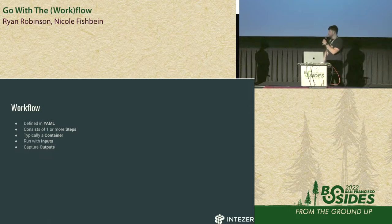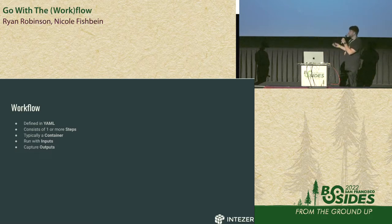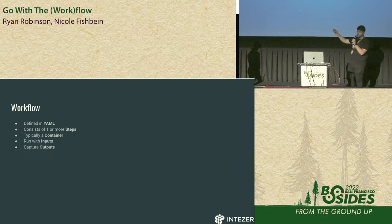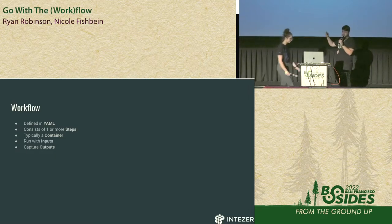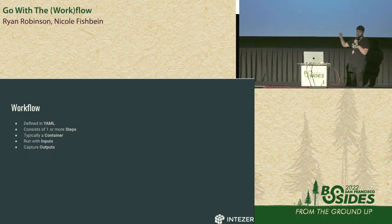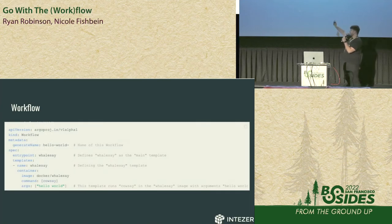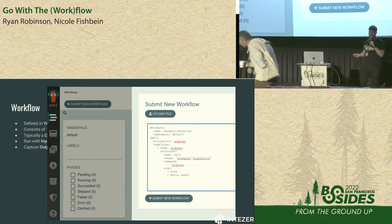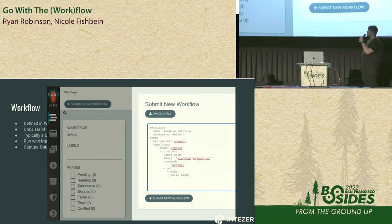In Argo, a workflow is defined in YAML. A workflow consists of one or more steps; typically a step will be a container, though it can also be scripts or Kubernetes resources. Very simply: start a step with an input, capture the output of the processing from that step, and then use that output as an input to the next step, and so on. That's just some YAML for 'hello world' in Argo, and that's what it looks like when you submit it through the server UI. There's also a CLI tool if you prefer the terminal.